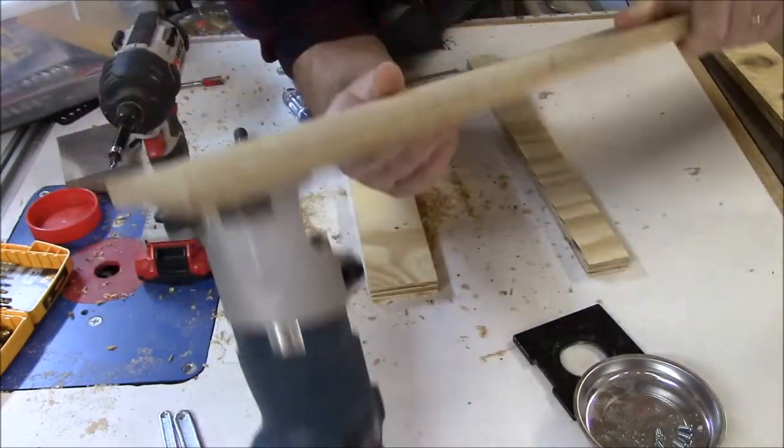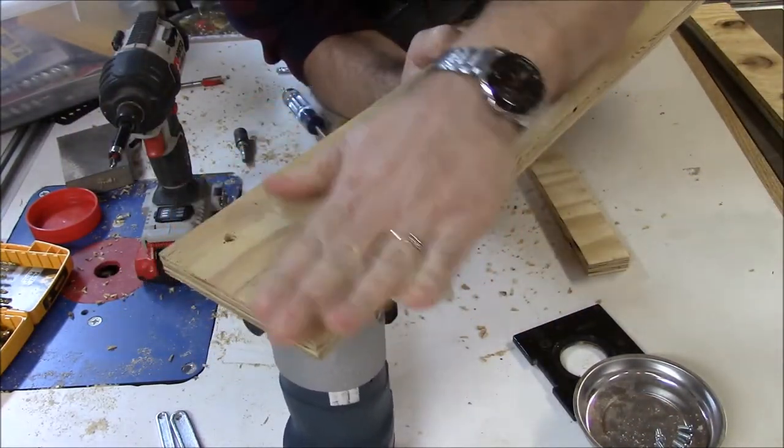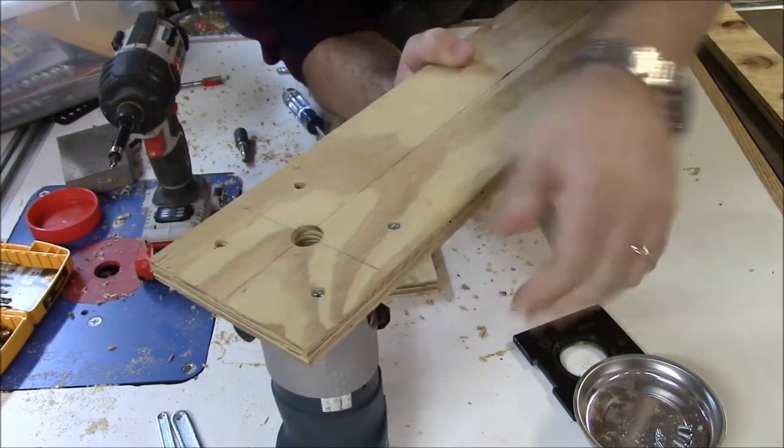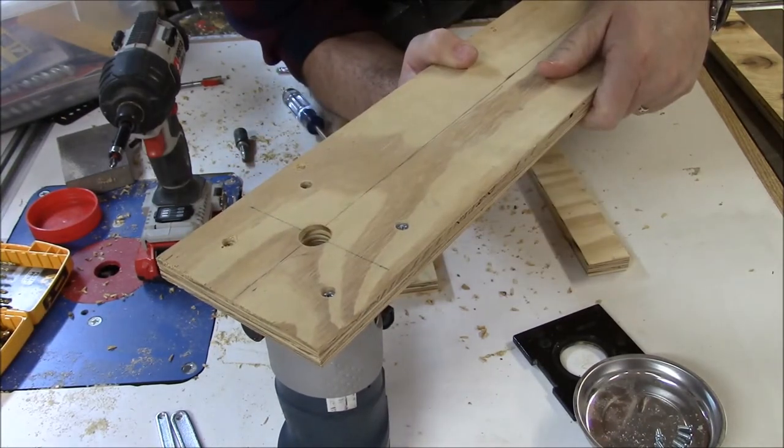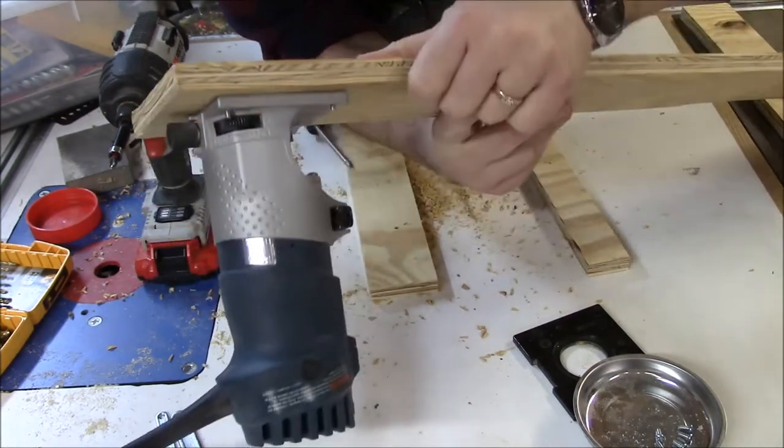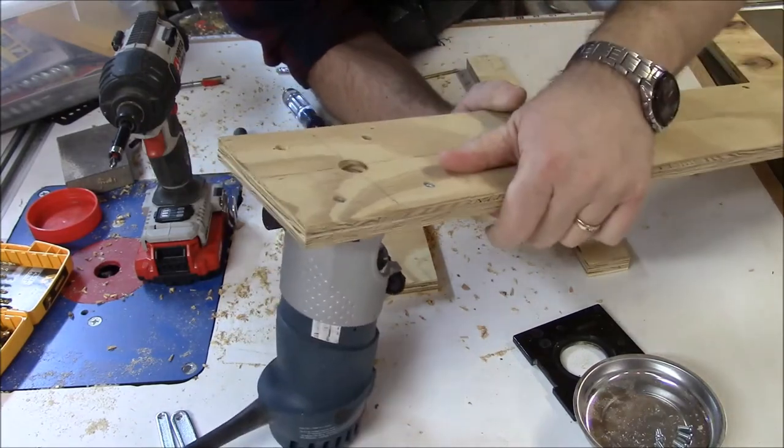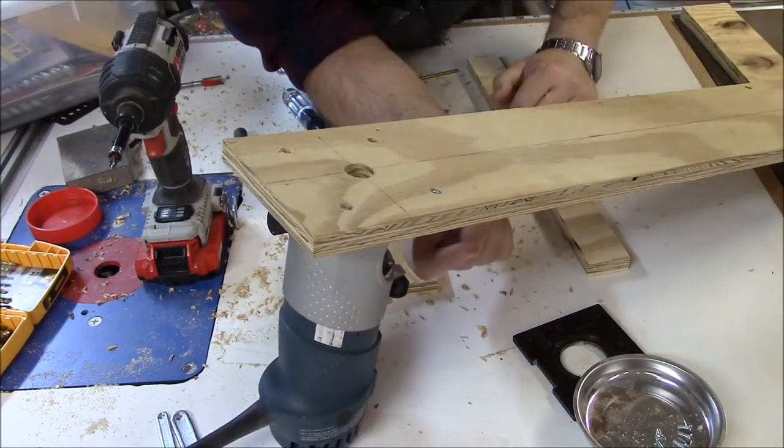There we go. There's our trammel. It's pretty much done. See I've countersank all the screws so they're nice and flush. So they're actually below the level of the wood. They won't get caught up on anything. Got the nice hole in there. It's mostly centered. Now we just got to put our bit in and figure out our distance.